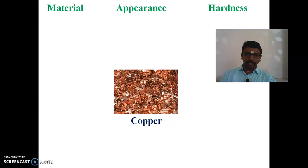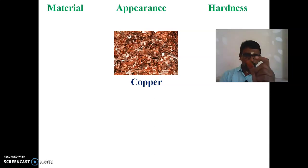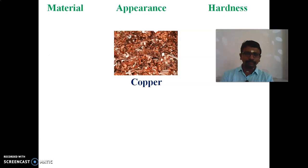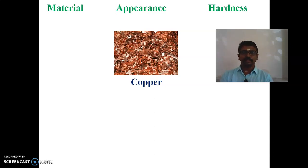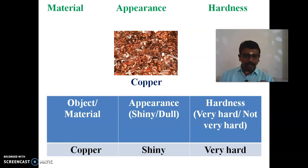The next material is copper — symbol Cu. Its appearance is shiny, and its hardness is very hard. So we can conclude: copper's appearance is shiny and its hardness is very hard.